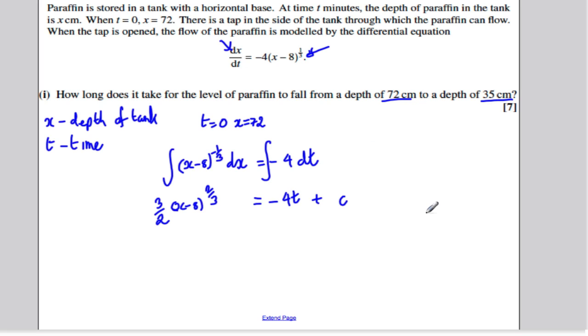Now, you know when t was 0, x is 72. So now what you could do is sub in t equals 0, x equals 72 into this here. If t is 0, this disappears, and this tells us that c is 72 minus 8, which is 64 to the 2 thirds. So 64 to the 2 thirds is 16, and 16 times 3 over 2 is 24. So the particular solution to this differential equation is 3 over 2, x minus 8 to the 2 thirds, is equal to minus 4t plus 24.